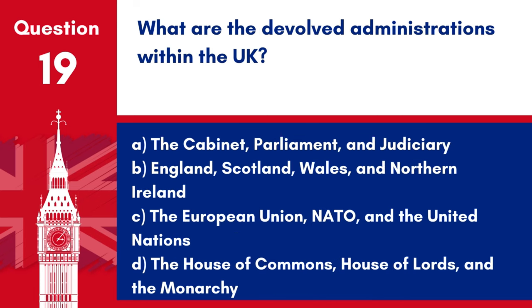Question 19. What are the devolved administrations within the UK? A. The Cabinet, Parliament and Judiciary. B. England, Scotland, Wales and Northern Ireland. C. The European Union, NATO and the United Nations. D. The House of Commons, House of Lords and the Monarchy. Answer: B. England, Scotland, Wales and Northern Ireland. The devolved administrations within the UK refer to the governments of Scotland, Wales and Northern Ireland, which have varying degrees of legislative power.